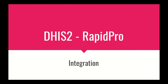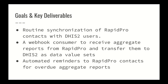This short video is about the latest changes to the DHIS2 to RapidPro integration middleware. This middleware implementation has three key goals: first, routine synchronization of RapidPro contacts with DHIS2 users — synchronizing DHIS2 users having valid phone numbers to RapidPro as RapidPro contacts. The second goal is a webhook consumer to receive aggregate reports from RapidPro and transfer them to DHIS2 as data value sets. The last goal is automated reminders to RapidPro contacts for overdue aggregated reports.